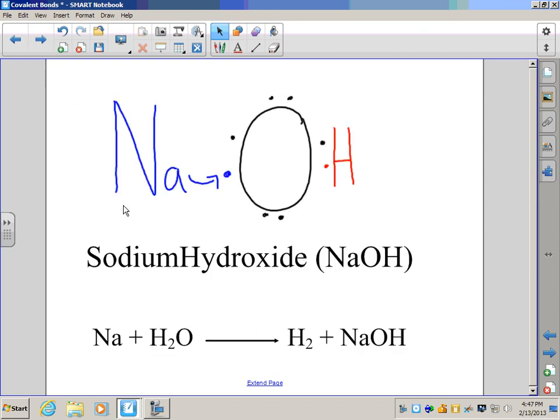So if it can pick up one electron, say from sodium, sodium wants to give away one electron. Sodium gives away its electron to the hydroxide ion or molecule, and now it's an ion because it has one more negative than it does positive. So it's a negative charge. Sodium is a positive charge now. Opposites attract, and we stick together in a substance called sodium hydroxide, a very common household substance that's also known as drain cleaner.